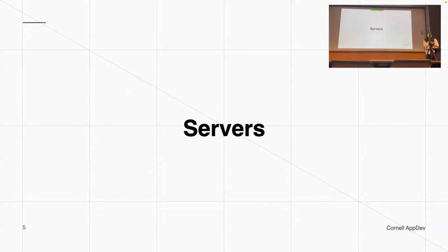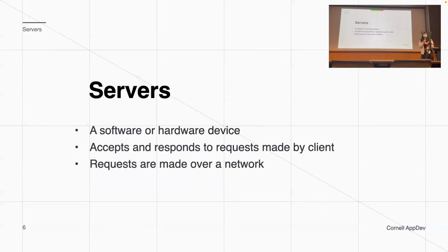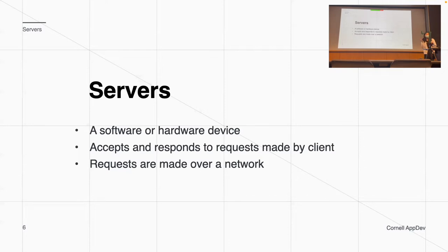Let's talk about servers. When we run an image as a container, that becomes a server that allows us to access different kinds of requests and get different types of responses. A server, more abstractly, is just a software or hardware device that accepts and responds to requests made by a client. There are all different types of requests you're able to make in this class, like POST, GET, and DELETE, and these requests are made over a network.